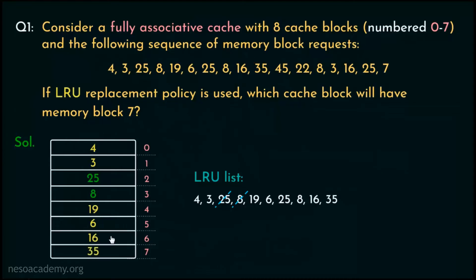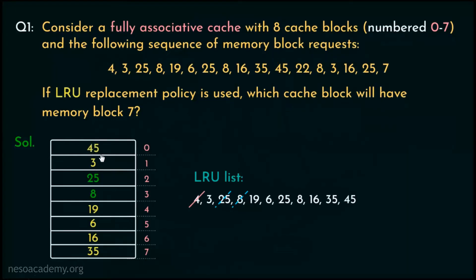Block requests 16 and 35 are placed in line numbers 6 and 7 respectively and added to our LRU list; 35 becomes the most recently used block. During block request number 45, the cache is full. From our LRU list, block number 4 is the least recently used, so block 4 is selected for eviction, making space for block 45. Since block 45 is now the most recently used, it is added at the end of our LRU list.